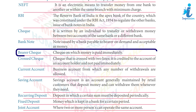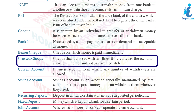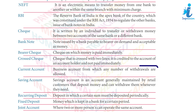Bearer Cheque — a cheque on which money is paid immediately. Cross Cheque — a cheque that is crossed with two lines; it is credited to the account of an account holder and not paid immediately.